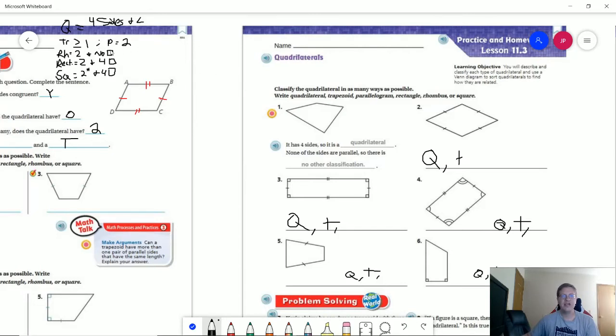And then if we have two pairs of parallel lines then we have a parallelogram. So this one is going to give us a parallelogram, this one is going to give us a parallelogram, this one is going to give us a parallelogram. And the last two are not because I only have one pair of parallel sides.